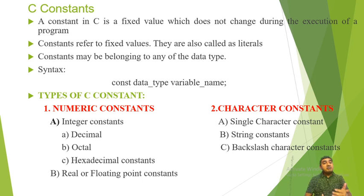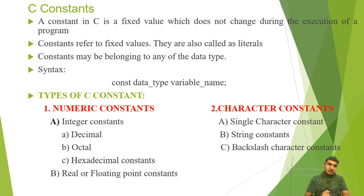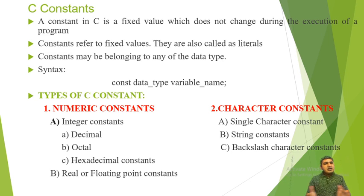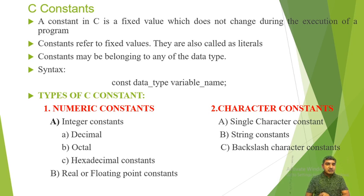A constant may belong to any of the data types — it may be an integer, a real or floating point constant, or a character. The syntax of the C constant includes the data type (integer, float, character, or string) and the variable name. There are different types of C constants: first is numeric constant and second is character constant. In numeric constant there are two types: integer constant and real or floating point constant.